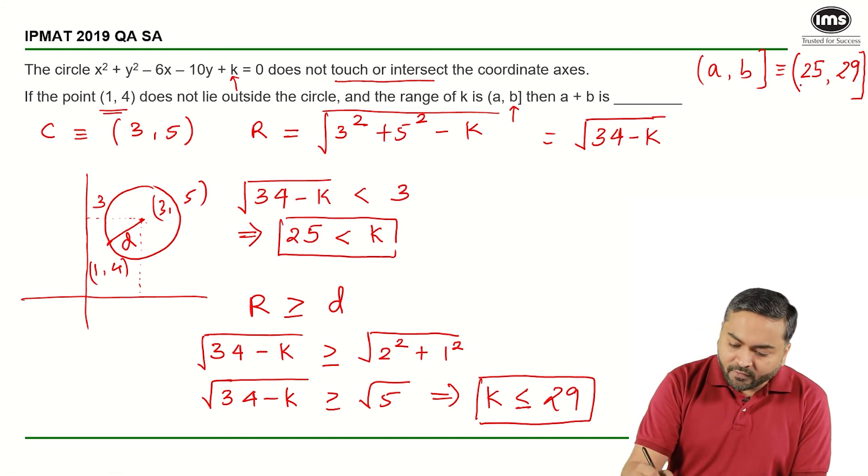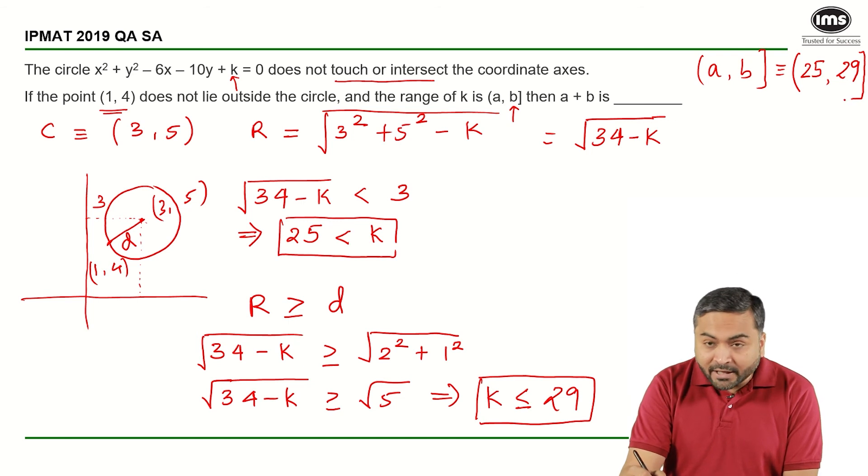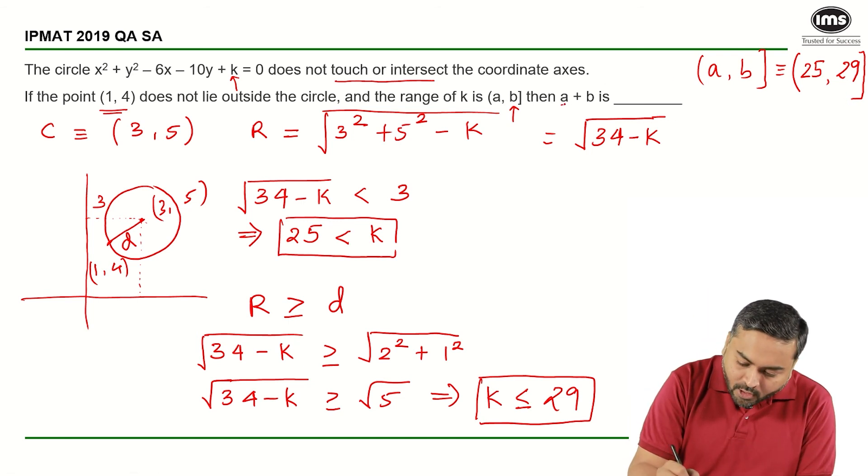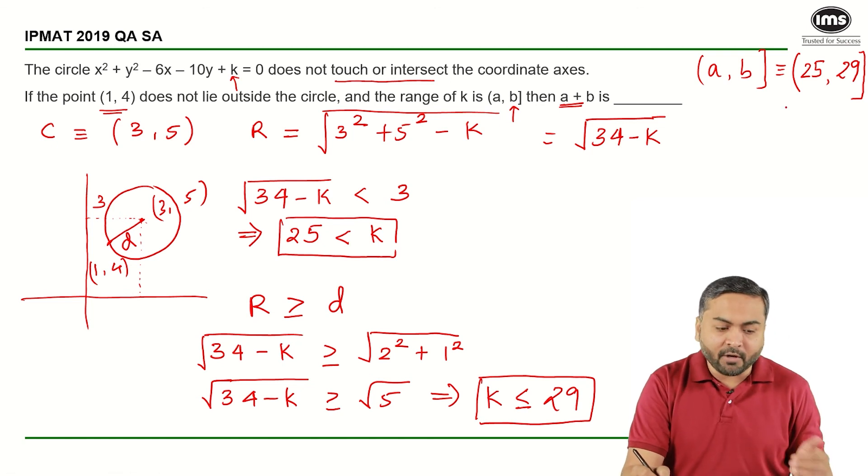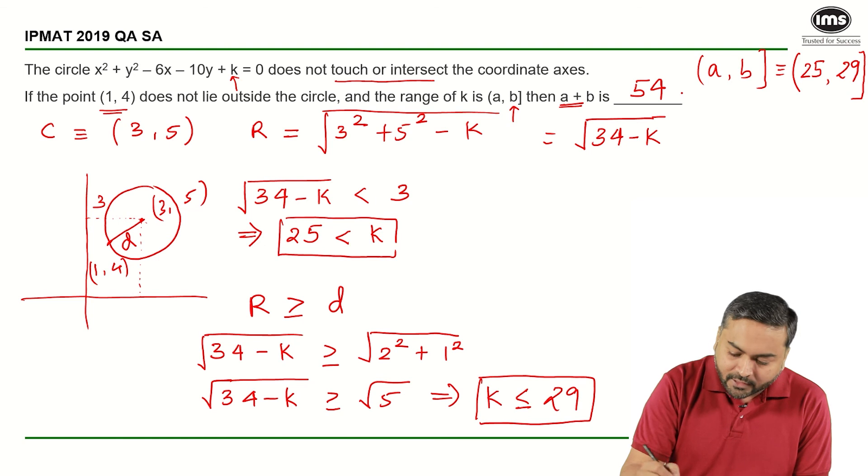So I have got the value of a is 25, value of b is 29. What am I supposed to find out? What is the value of a plus b? So the value of a plus b will be nothing but 25 plus 29, that is equal to 54, and that is the correct answer.